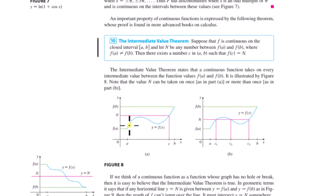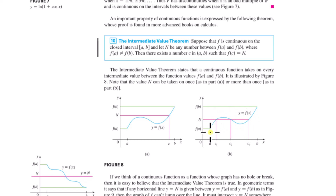This seems like an obvious statement, but mathematicians use it to prove things. There may be more than one value of c that corresponds to N, but the theorem still holds. Pick any value of N between f(a) and f(b), and there will be at least one c where f(c) equals the number you picked.